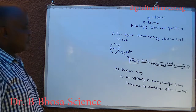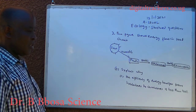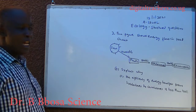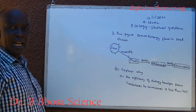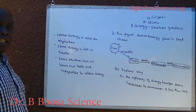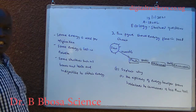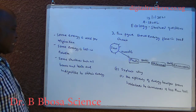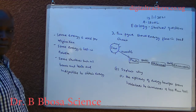B. Explain why the efficiency of energy transfer from herbivores is less than 100%. You can pause and answer. Some energy is used in respiration. Some energy is lost in excreta. Some structures such as bones and teeth are indigestible to obtain energy.